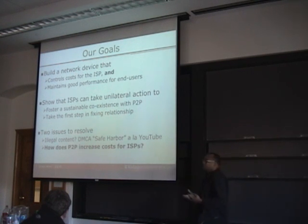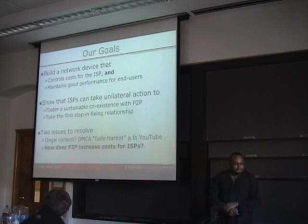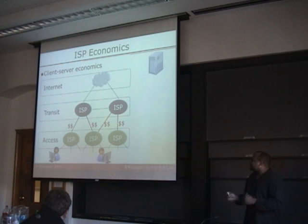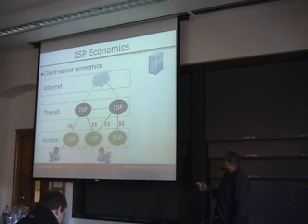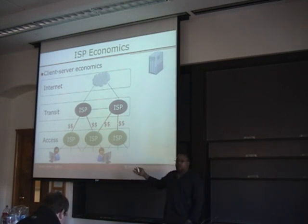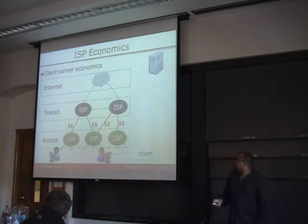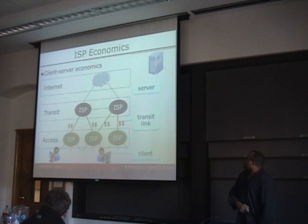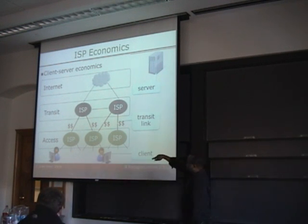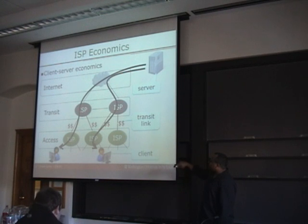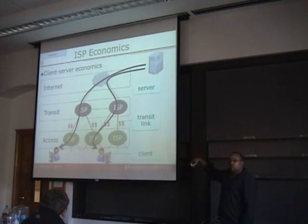The next question is how P2P actually increases transit traffic and what we do to reduce it. In a typical client-server architecture, imagine a user downloading a file from a webpage. Traffic within the access ISP's network is essentially free. What's really expensive is the traffic on the transit link — the link between the transit ISP and the access ISP. In a typical file download, each user downloads a file which travels the link only once.